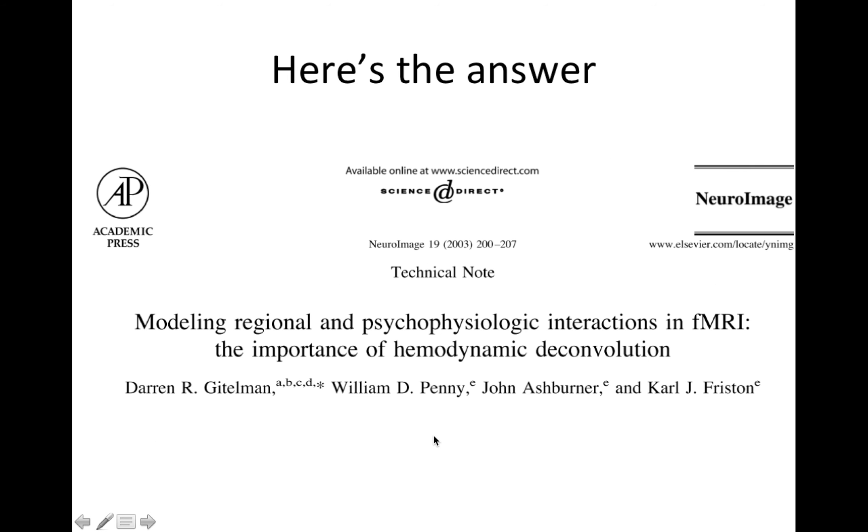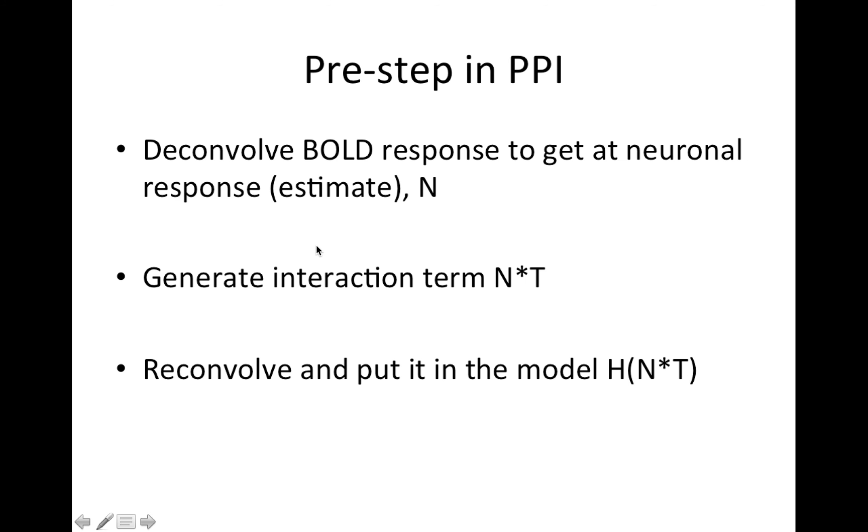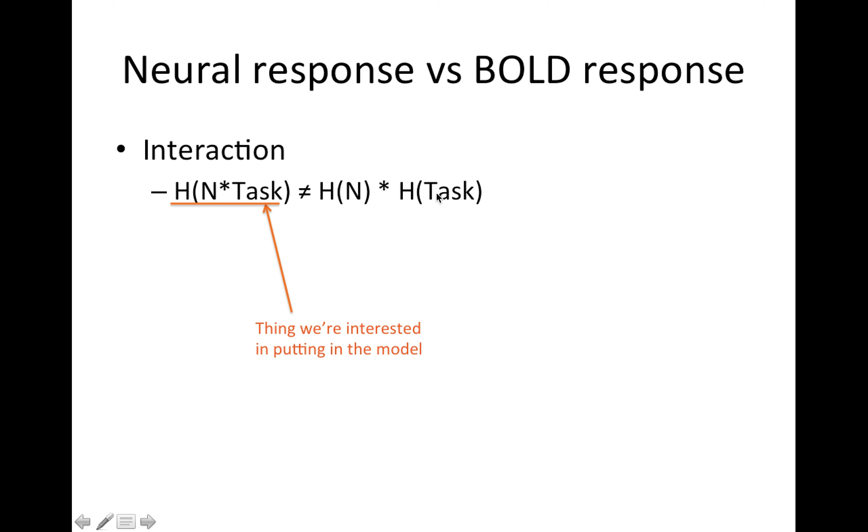And that is what this paper looks at. So this is from 2003, this Gittleman paper. There's one other PPI paper prior to this, but this is the one that gets into this deconvolution. So turns out these are not equal. These are the things that we're interested in putting in the model, whereas these are the two things we know. So we need to figure out how to get this or how to estimate this in some way.